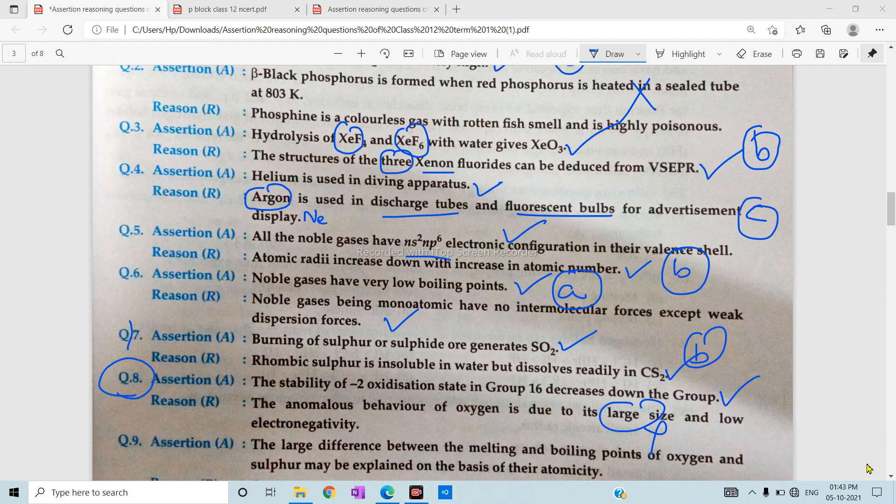And anomalous behavior of oxygen is due to its large size. This statement is wrong. Stability of minus 2 oxidation state is correct. Anomalous behavior of oxygen is due to its small size, not large size. So this statement is wrong. So this answer will automatically be C.